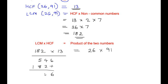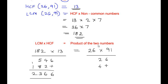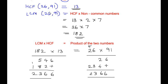Adding these together we get 2366. Now doing the long multiplication for 26 times 91: we also get 2366. So we have verified that LCM times HCF of these two numbers is equal to the product of the given two numbers.